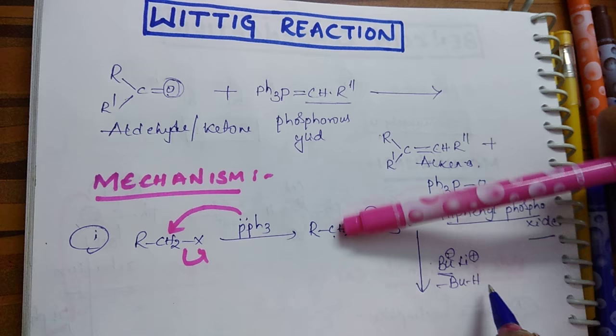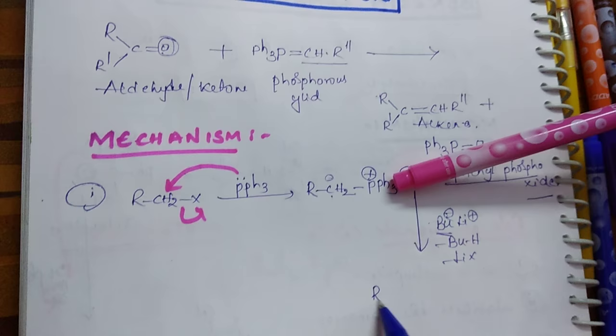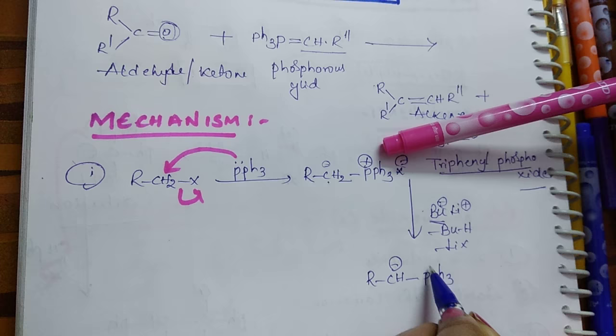...anion, and this lithium and this halogen goes as LiX. What we get, students? R-CH minus and P-Ph3 plus. This is nothing but the Wittig reagent.